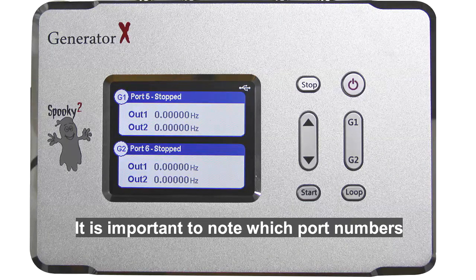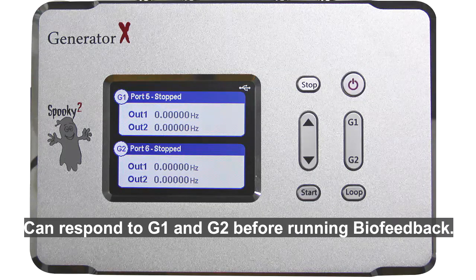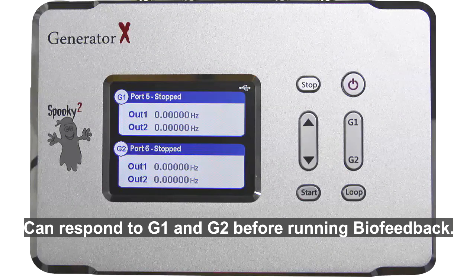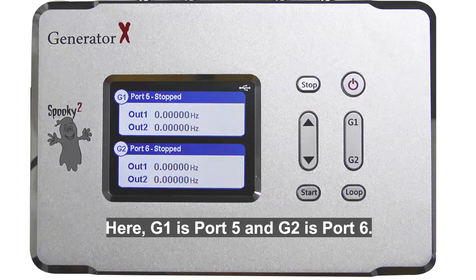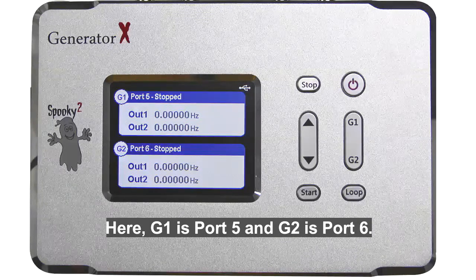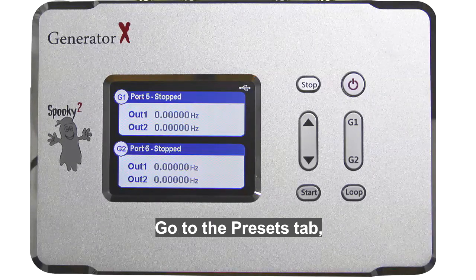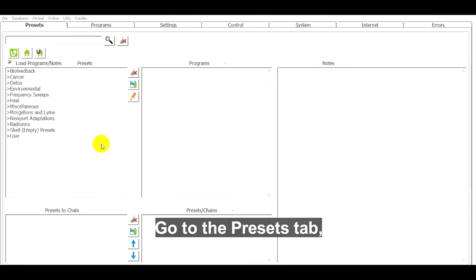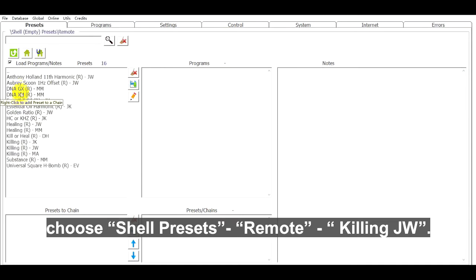It is important to note which port numbers correspond to G1 and G2 before running biofeedback. Here G1 is port 5 and G2 is port 6. Go to the Presets tab and choose Shell Presets - Remote - Killing JW.